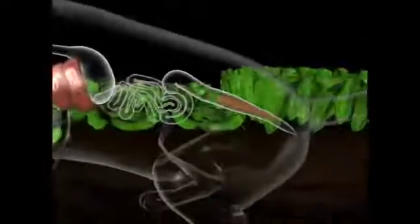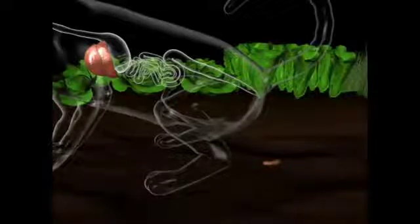Once on the outside, these oocysts will mature and become very infective. People and animals can be contaminated by consuming raw vegetables from a garden or water sources contaminated with oocysts.